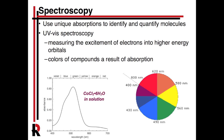The maximum absorbance of a molecule ends up becoming one of its defining properties. It defines color — what we actually see — and it can also be used to identify an unknown mixture. There are lots of other molecules with similar absorbances, so it's not an end-all, be-all, but it's especially useful for quantitating a solution when it's purely a known compound, such as cobalt chloride.